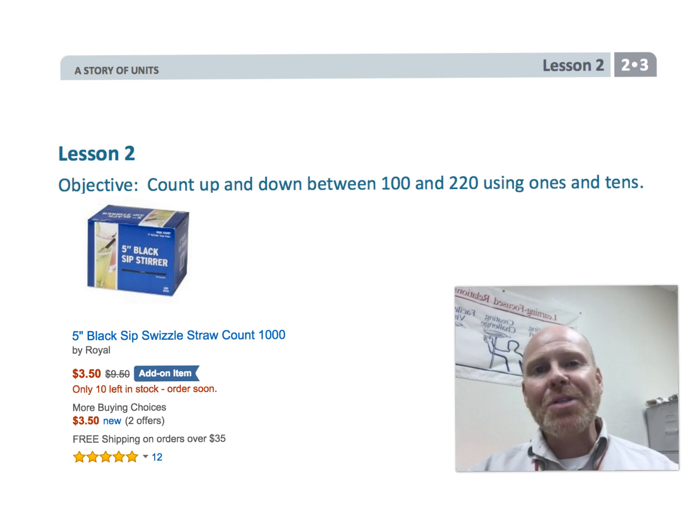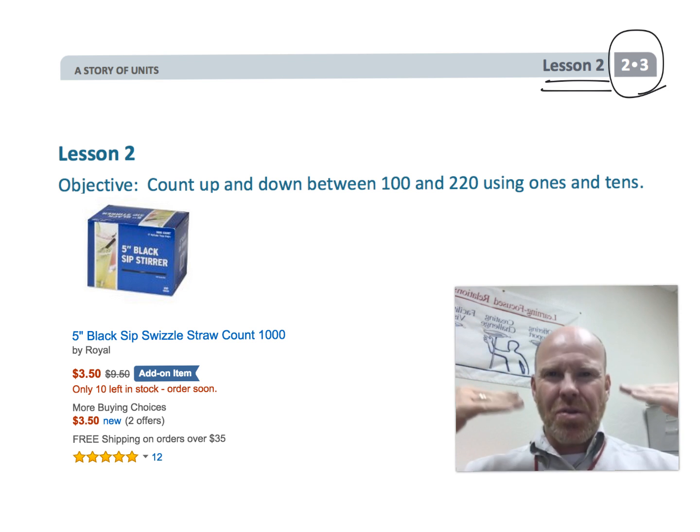This is second grade module 3 lesson 2. In this lesson students are going to continue counting, imagining those bundles of popsicle sticks. They're either in units, popsicle sticks all by themselves, they're in bundles of 10, or you have 10 tens bundled together to be a hundred. We really want our students to be thinking about numbers in terms of these bundles at this point. We're trying to make the place value system a physical representation.